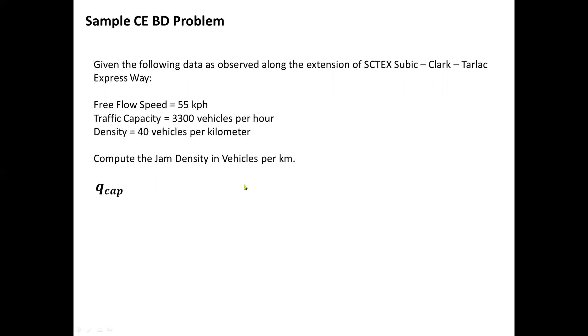So first and foremost, we have to summarize all the given that we have. We have the Q capacity or Q cap, the maximum capacity; then K sub j, the jam density in vehicles per hour; U sub f, the free flow speed; and to solve for the K sub j, we have 4 Q cap all over U sub f.